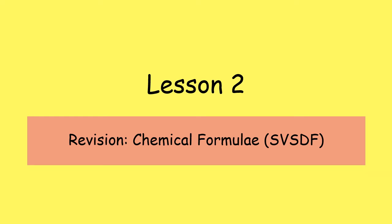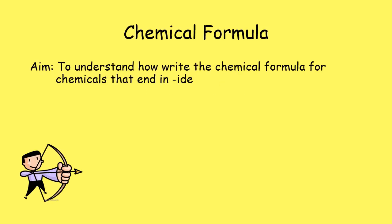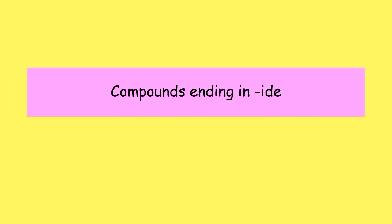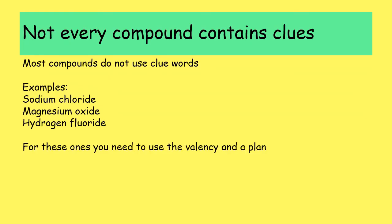Now we're going to look at using valency to write chemical formula for chemicals that end in IDE and contain no prefix clues whatsoever. Our success criteria for this part is to use the SVSDF method for writing chemical formula and to write formulas for compounds made of two elements. So specifically compounds ending in IDE with no clue words — for example, sodium chloride, magnesium oxide, and hydrogen fluoride. Any compound that ends in IDE only contains two elements: sodium chloride contains just sodium and chlorine; iron oxide contains just iron and oxygen; potassium sulphide contains only potassium and sulfur.